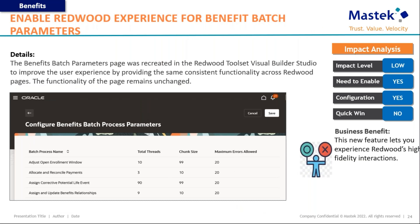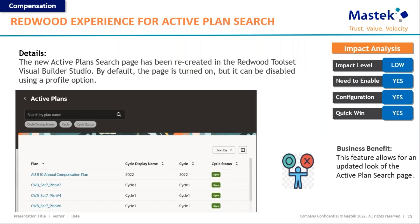The next feature is the Redwood UI experience for the benefit batch parameters page. This page has also been recreated in the Redwood UI, improving user experience by providing consistent functionality across Redwood pages. The functionality on the page itself remains the same — the only change is how it looks.